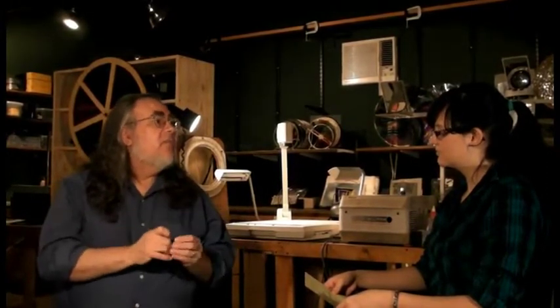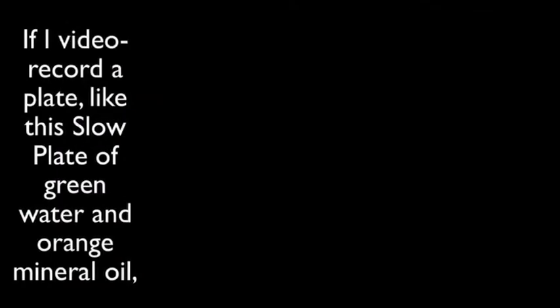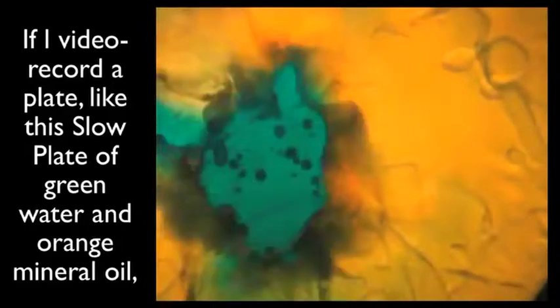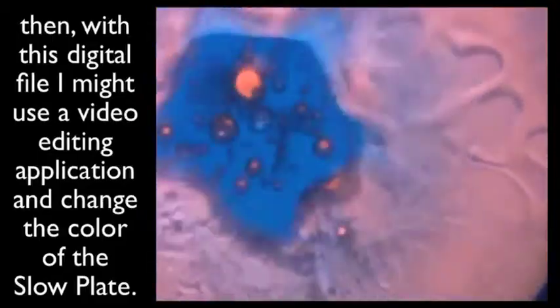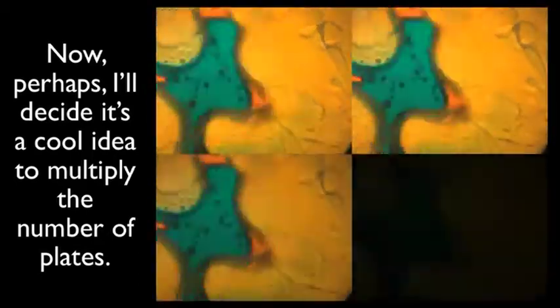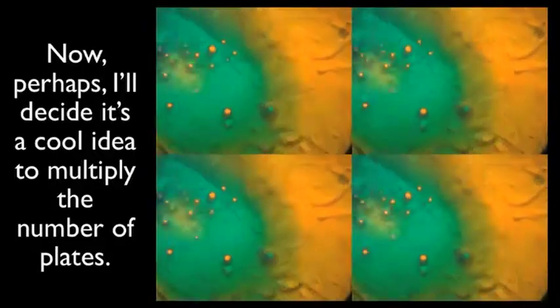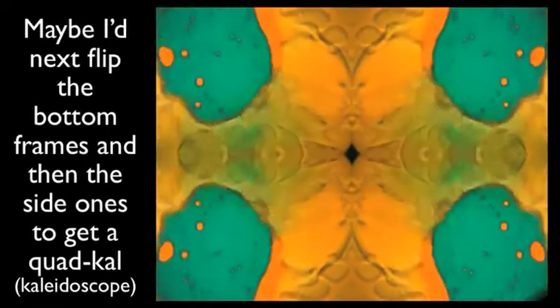How have you modified the techniques for today? We can videotape it and then make use of that digital video file. If I video record a plate, like this slow plate of green water and orange mineral oil, then with this digital file I might use a video editing application and change the color of the slow plate. Now, perhaps, I'll decide it's a cool idea to multiply the number of plates. Maybe I'd next flip the bottom frames and then the side ones to get a four-pane kaleidoscope.